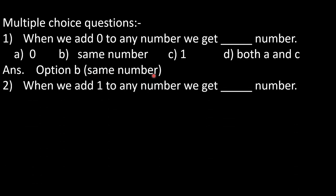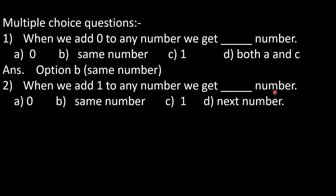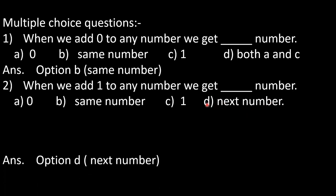In question number 2: when we add one to any number, which number will we get? Options: A) 0, B) same number, C) 1, D) next number. Suppose we add 2 plus 1 — we get 3, which is the next number. If we add 1 to 9, we get 10, which is the next number. So our option D is correct.